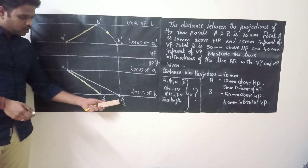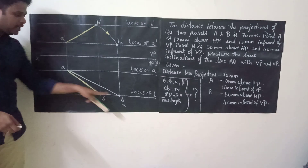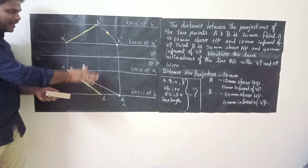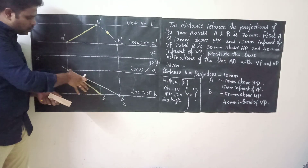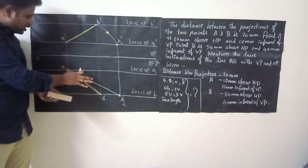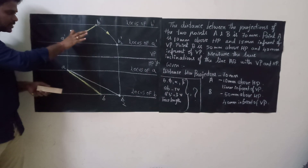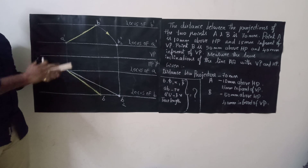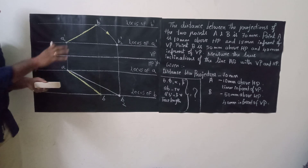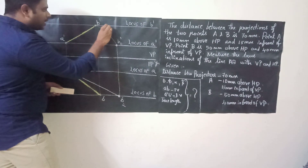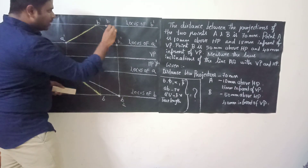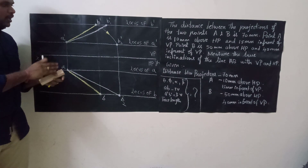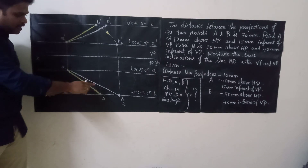Join A and B2 — A to B2 represents your true length. Measure A to B2 with your compass. Keep your compass at A dash and cut an arc on the locus of B dash; name that intersection point B1 dash. Join A dash to B1 dash — that is also your true length. Both A dash to B1 dash and A to B2 are equal to the true length.